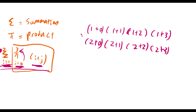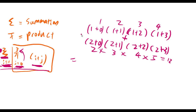Because this is a summation, we add the results together. For i equals 1: 1, 2, 3, 4 — multiply to get 24. For i equals 2: 2, 3, 4, 5 — multiply to get 120. The total is still 144, the same answer as before.